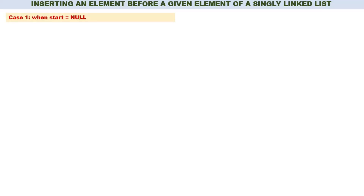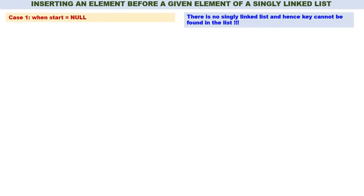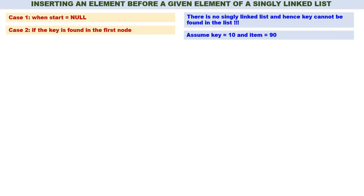Case 1: when start is equal to null, there is no singly linked list and hence key cannot be found in the list. For Case 2, let us assume key is equal to 10 and item is equal to 90. We have to search for key, that is 10, and before 10 we have to make an insertion of 90 — so 90 should be inserted before 10.